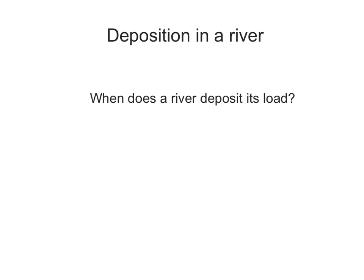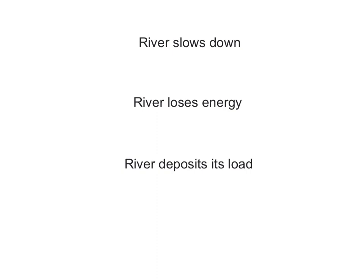In this tutorial you'll learn about deposition in a river, more precisely when does a river deposit its load. When a river slows down it will automatically lose energy. And if a river loses energy it will automatically deposit anything that it's carrying — its load, whether it's boulders or pebbles, sand, silt, or clay.